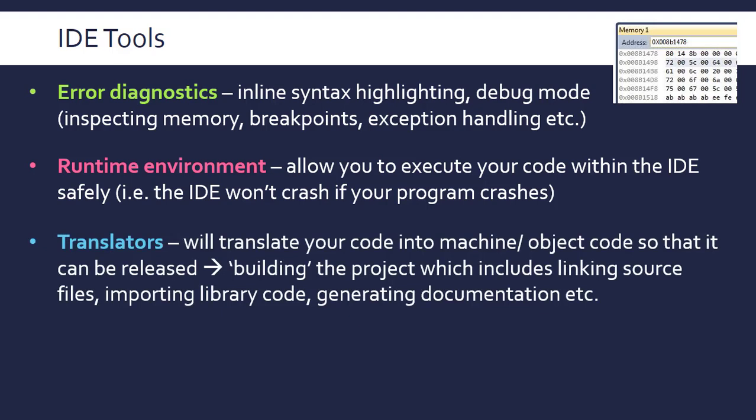Finally, translators — which we've looked at in the previous video — will translate your code for you. Different IDEs use different translators: interpreters, compilers, or maybe a bit of both. When you actually want to release an application, there are also things you need to do: you may have source files, header files, libraries — you have to link them all together, and you may need documentation telling people what the parameters and return types are. An IDE can do all this for you, which is a lot easier.